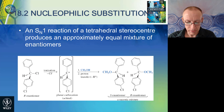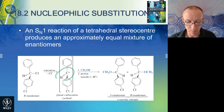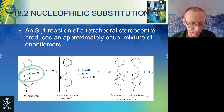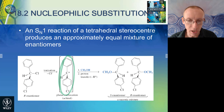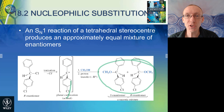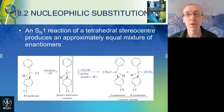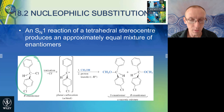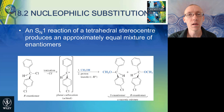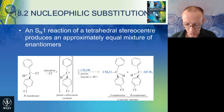In SN1 nucleophilic substitution reactions, because the nucleophile can attack the carbocation from either side, if we started with one enantiomer of the haloalkane — if it's chiral — because the carbocation is achiral and flat, we'll end up with a racemic mixture of the two enantiomers of the product. The nucleophile can come in from either side to give either the S or the R enantiomer. The racemization of an enantiomerically pure chiral haloalkane is evidence for an SN1 type of mechanism.